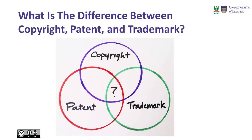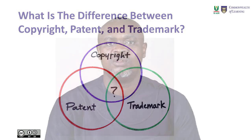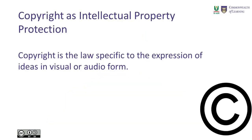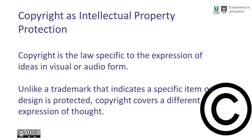What is the difference between copyright, patent, and trademark? It would be nice to have distinct definitions and explanations for these three different laws. The table on your screen shows the differences in these various laws — copyright, patent, and trademark. What is protected under copyright? Copyright as intellectual property protection: intellectual property is protected by law specific to the expression of an idea. Copyright is the law specific to the expression of ideas in visual or audio form, unlike a trademark that indicates a specific item or design is protected.